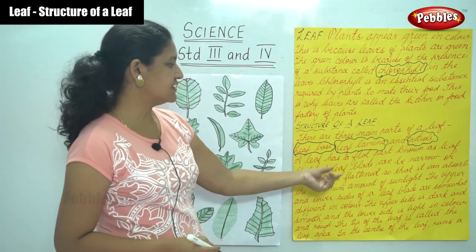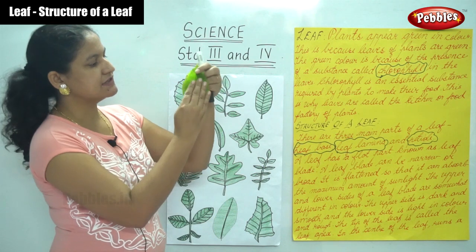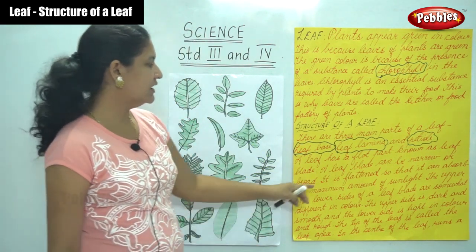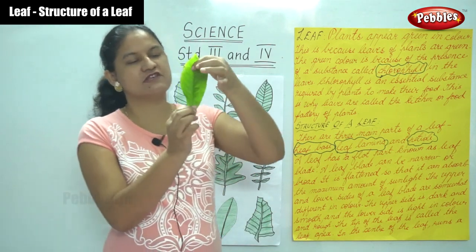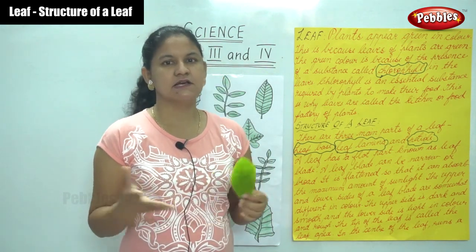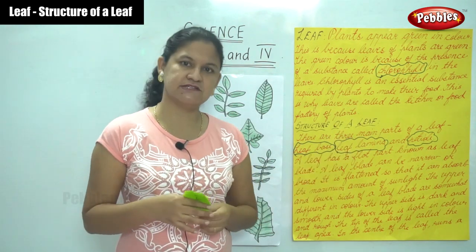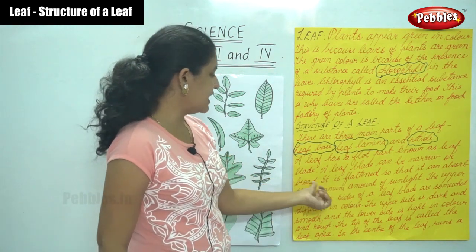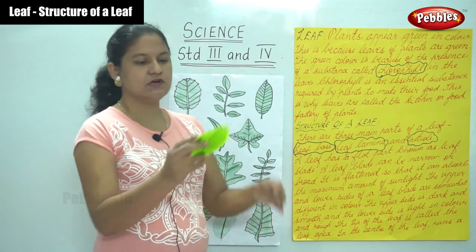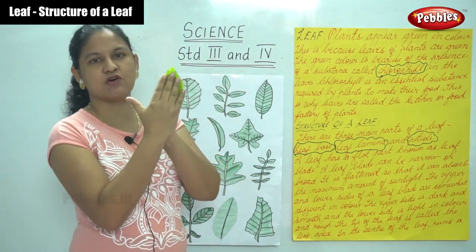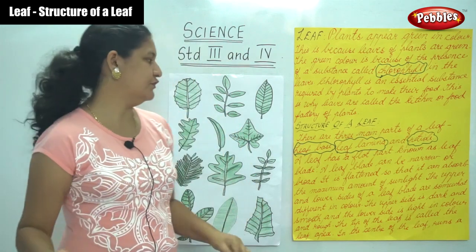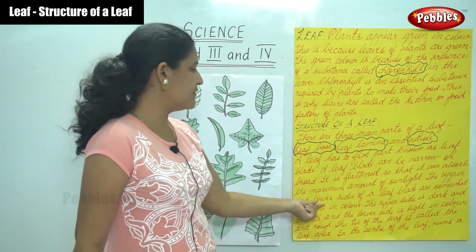A leaf has a flat part known as the leaf blade. The leaf blade can be narrow or broad — for example, in some plants the blade is narrow, while in plantain leaves it is quite huge and broad. The leaf is flattened so that it can absorb the maximum amount of sunlight, because only with the presence of sunlight can a plant prepare its food.